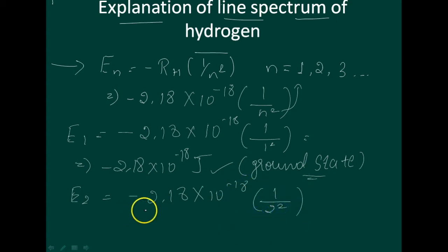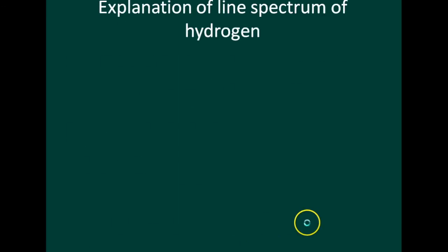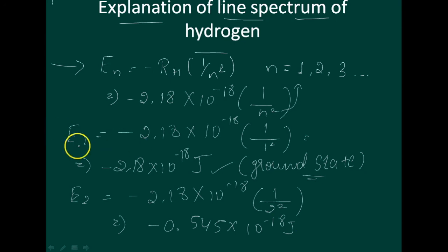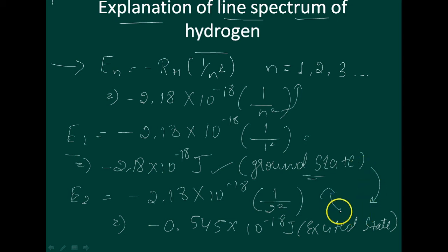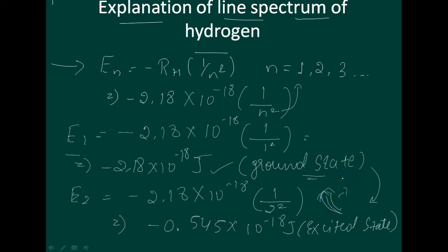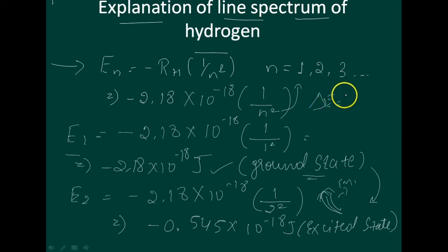This is the line spectrum of hydrogen, showing the ground state and the excited state. Electrons can move from one energy level to another — from ground state to excited state, or from excited state to ground state. When an electron jumps from excited state to ground state, emission occurs. When it moves from ground state to excited state, absorption takes place. Then delta E can be written accordingly.